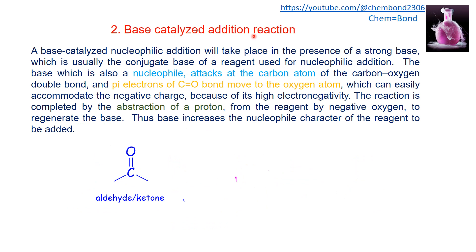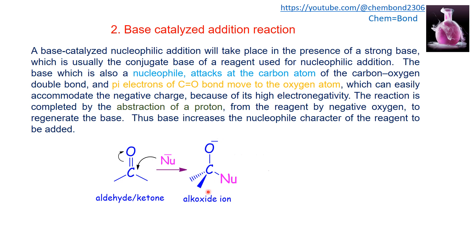The second type is base-catalyzed nucleophilic addition, which takes place in the presence of a strong base — usually the conjugate base of the reagent used. The base, which also acts as a nucleophile, attacks the carbonyl carbon. The pi electrons shared between carbon and oxygen shift toward the oxygen atom, because oxygen can easily accommodate the negative charge due to its high electronegativity, forming an alkoxide ion.